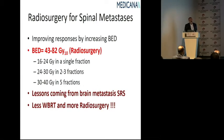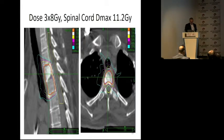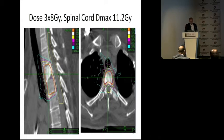We know from brain metastases that radiosurgery gives much better results than whole-brain radiotherapy. So why not use radiosurgery for spinal metastases as well? The paradigm shift is moving from palliative doses to curative doses. This dose plan shows how we can spare the spinal cord with a steep dose fall-off in the spinal canal.